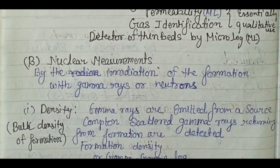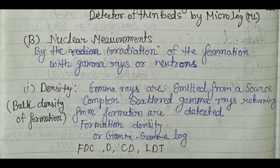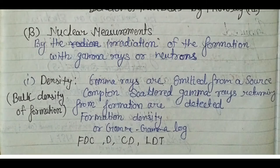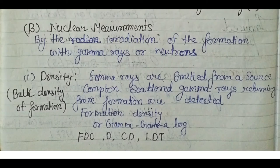Now come nuclear measurements. In the density log, the formation is irradiated with gamma rays from a source, and the Compton-scattered gamma rays returning from the formation are detected. We obtain the bulk density of the formation — bulk density means both the matrix and the pore spaces are contributing to the signal. This is also called the gamma-gamma log because we emit gamma and measure gamma.